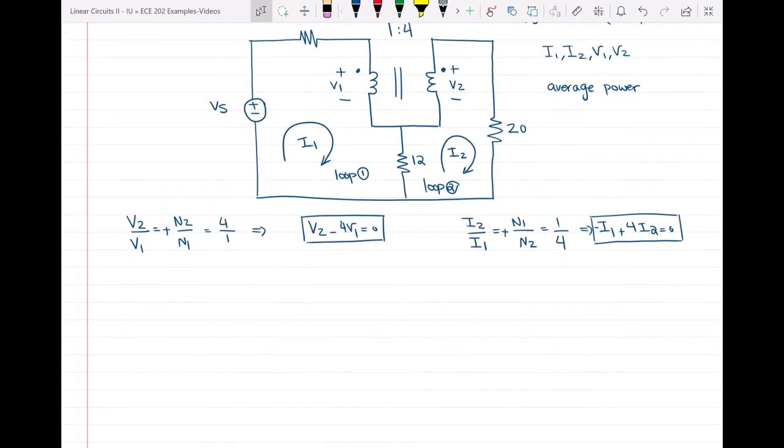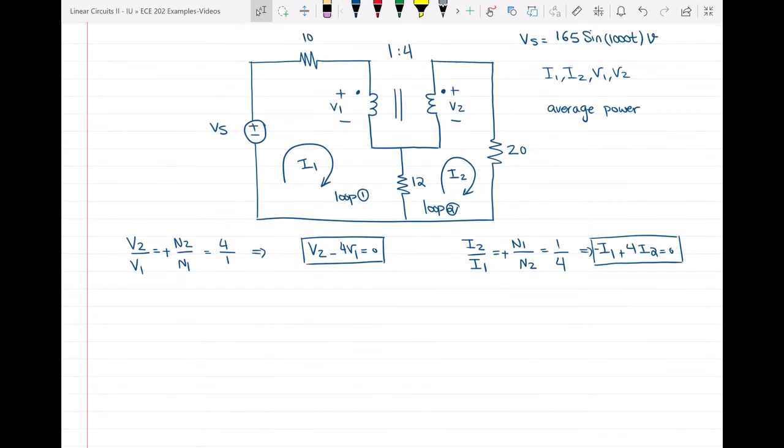Now I'm going to write a KVL at loop one. KVL at loop one will be Vs, and we have Vs over here. It is 165 sine of 1000t. So it is 165 with the angle of zero. I can write this as 165 is going to be equal to 10I1 plus V1 plus 12 multiplied by I1 minus I2.